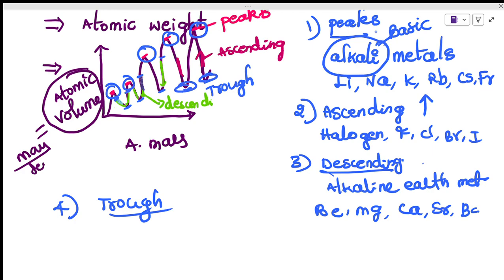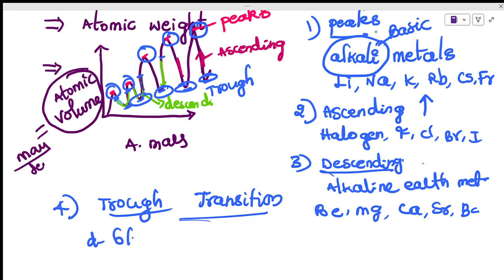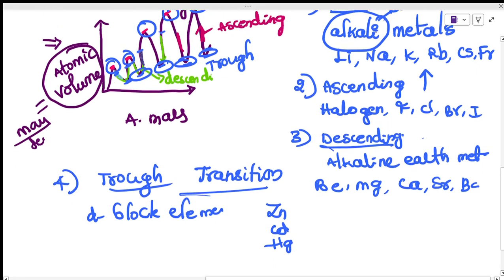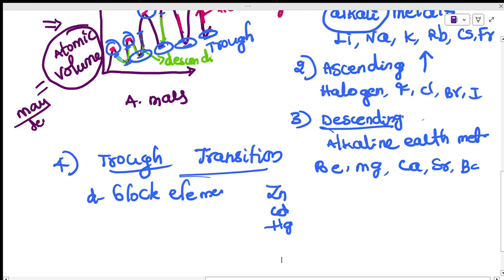The trough — the bottom portion — contains transition elements, also called d-block elements. Each trough has one transition element. Note that zinc, cadmium, mercury, and copernicium are not considered transition elements in this classification.